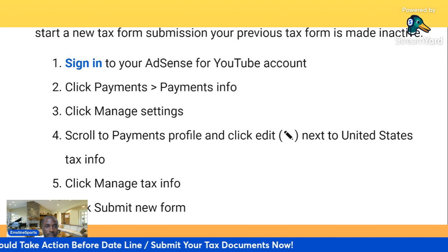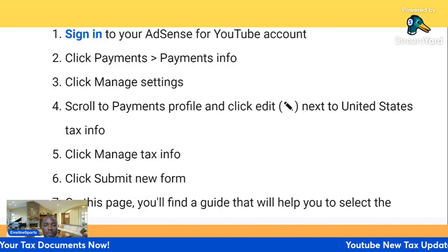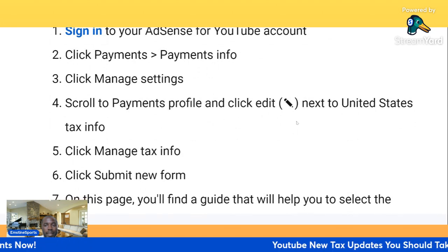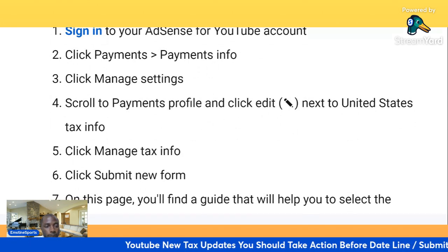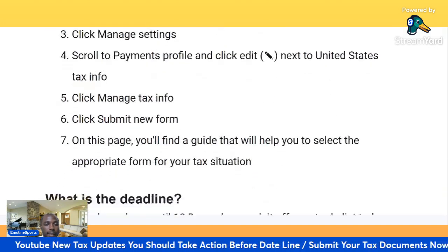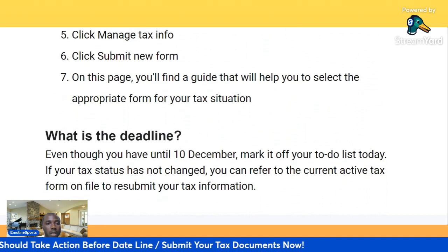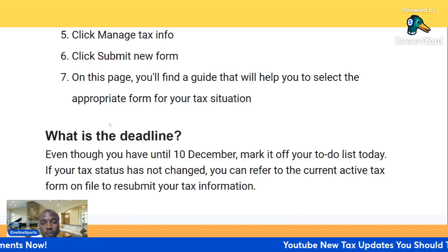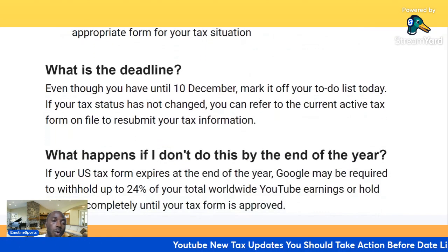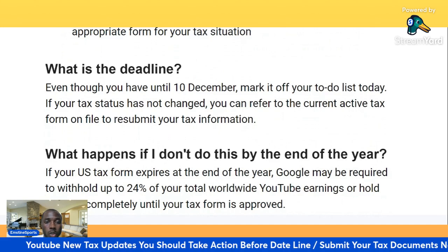Step one: sign into your AdSense for YouTube account. Step two: click Payment Info. Step three: click Manage Settings. Step four: scroll to Payment Profile and click Edit next to United States Tax Info. Step five: click Tax Info. Step six: click Submit New Form. Step seven: on this page you will find a guide that will help you select the appropriate form for your tax info.